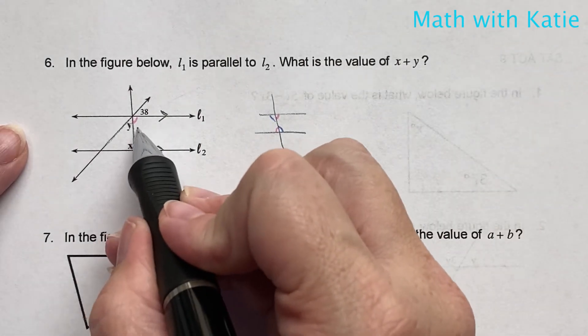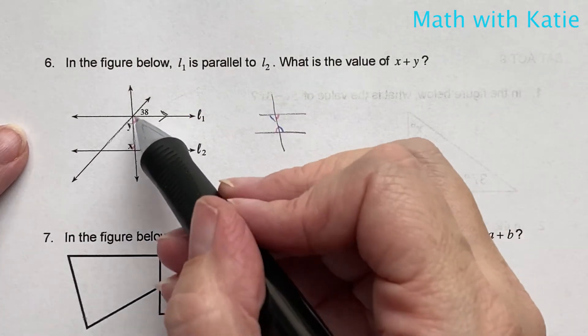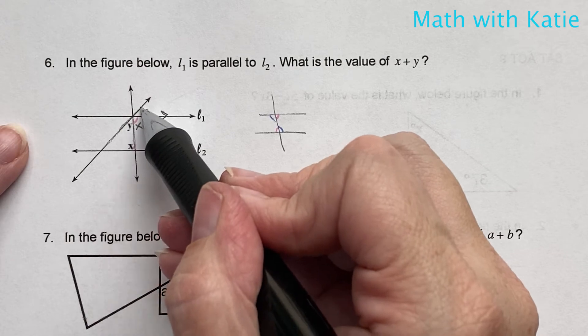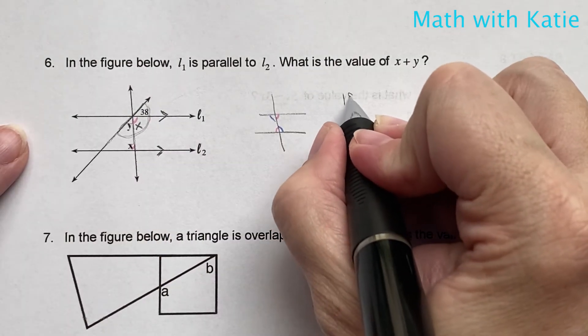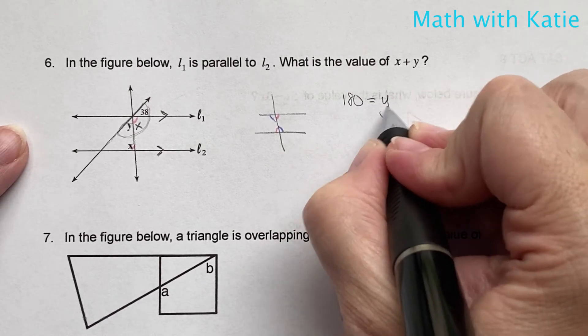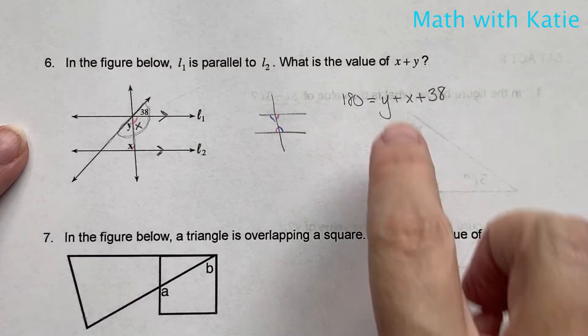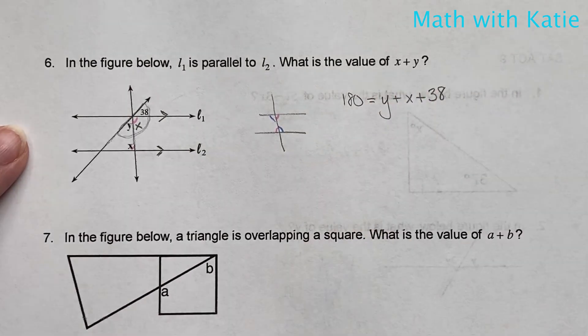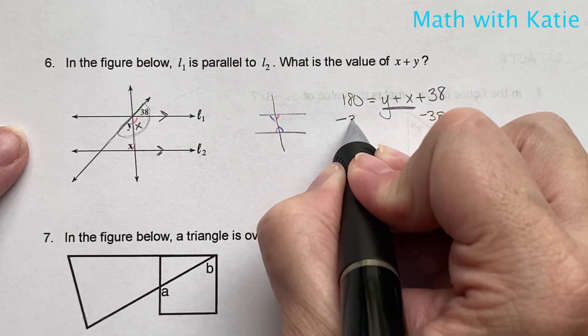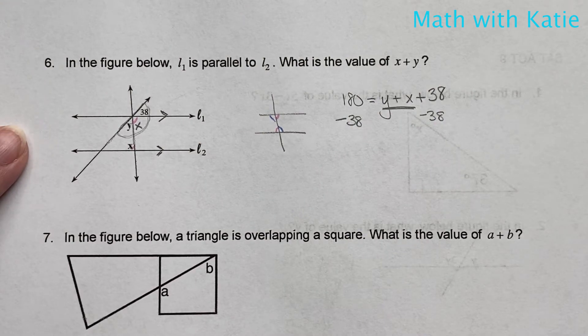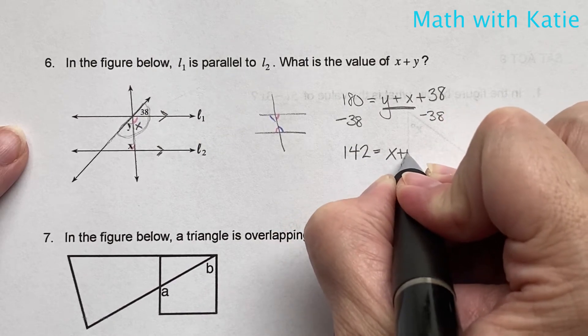Now that we know that, we know that this also has a value of x. And since you can see that these three angles form a linear pair, we're going to do 180 is equal to y plus x plus 38. There's our x plus y, so we want to keep that. Now all you need to do is subtract 38 from both sides. So 142 is equal to x plus y.